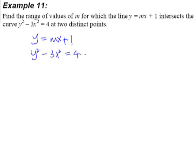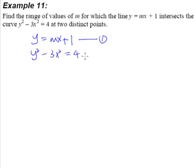What we are more interested in is the range of values of m — not the intersection points themselves. We know that there will be two distinct intersection points, which means that when we solve this pair of simultaneous equations, we will get two x-values and two y-values. We'll call this equation one and equation two, and substitute equation one into equation two.